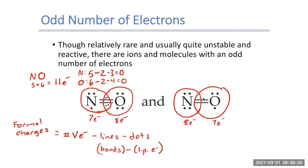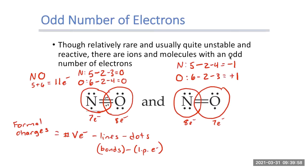Now for structure two: nitrogen has five valence electrons, minus two bonds, minus four lone pair electrons — that gives minus one. Oxygen has six valence electrons, minus two bonds, minus three lone pair electrons — that gives plus one. Since this structure has more formal charges, it is the less favorable structure. Structure one is our favorable structure, and structure two is less favorable.